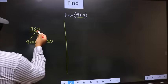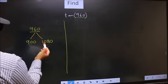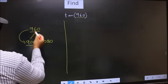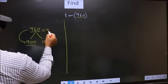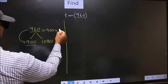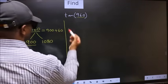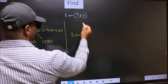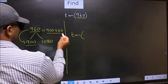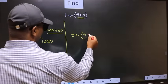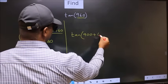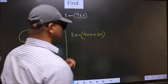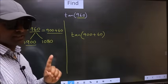Next, 960 is close to which number? This is close to 900. So in place of this, now we should write 900 plus 60. So this will become tan, in place of this, now we should write 900 plus 60. This is your step 1.